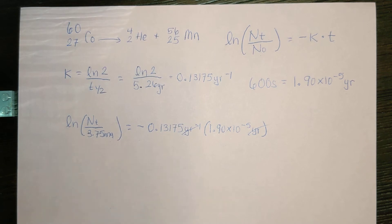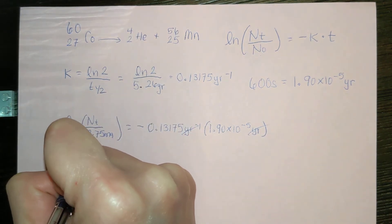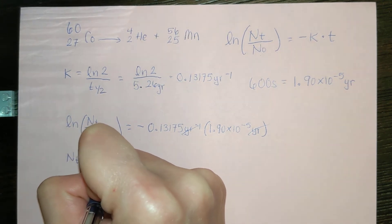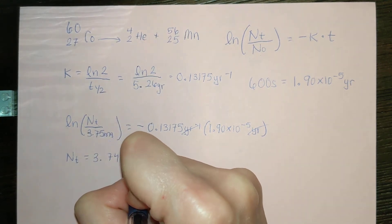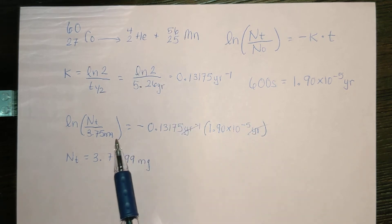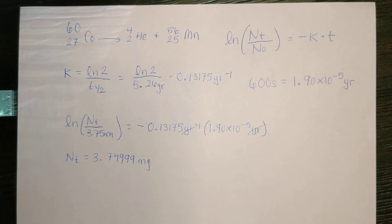Solving for nt, we get nt is equal to 3.74999 milligrams. That is how much is remaining after 600 seconds have passed, which kind of makes sense. Our half-life is 5 years, and we're only letting 600 seconds pass, so very much of it shouldn't have gone.